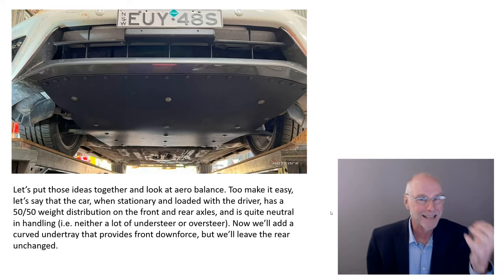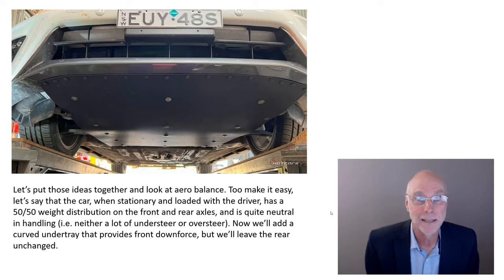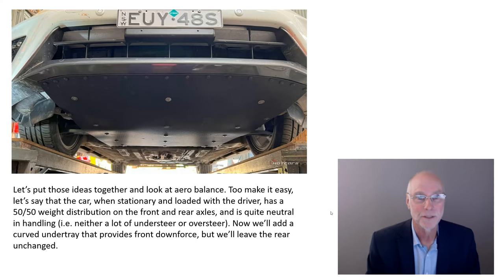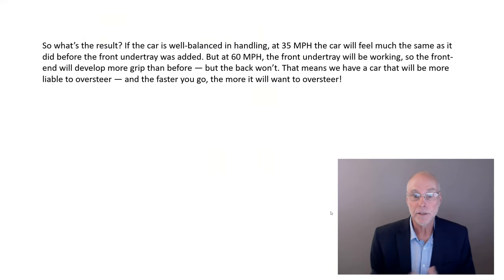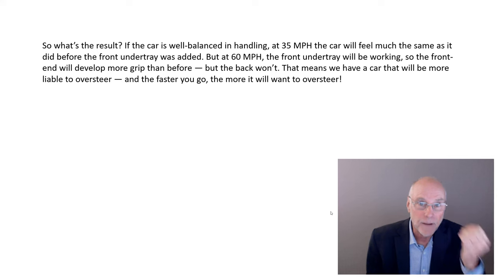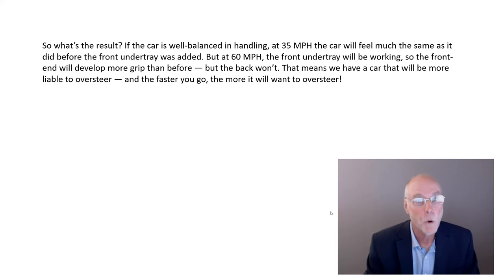That's just not theoretical — that's a reality. A swerve and recovery at 100 kilometres an hour, 60 miles an hour, or 120 kilometres an hour, 70 miles an hour, is much more likely to result in a spin if you have added front downforce but done nothing at the back. It's a bit like putting on a bigger rear anti-roll bar that gets bigger as you go faster. At 35 miles an hour, that car with the front undertray will feel just the same as before, because aerodynamics really aren't working at that low speed. But at 60 miles an hour, that front undertray will be developing downforce, and nothing's happening at the back. You've got more front grip, but not more rear grip, and that can be quite dangerous.